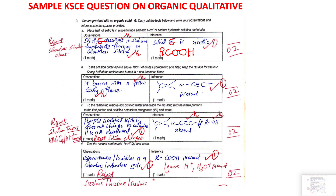Those are the sample questions on organic qualitative analysis. The most important thing to understand is that each test in organic qualitative analysis is independent — no correlation. That's why double bond and triple bond can appear present in one test and absent in another, and that is perfectly fine. We have come to the end of our lesson today — keep following Top Note Online TV, keep subscribing, liking, and comment any questions in the comment section.